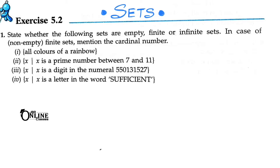First one: all colors of a rainbow. As you all know, there are a total of seven colors in a rainbow. That means this is a finite set. The number of elements is seven, so the cardinal number n(A) equals seven.